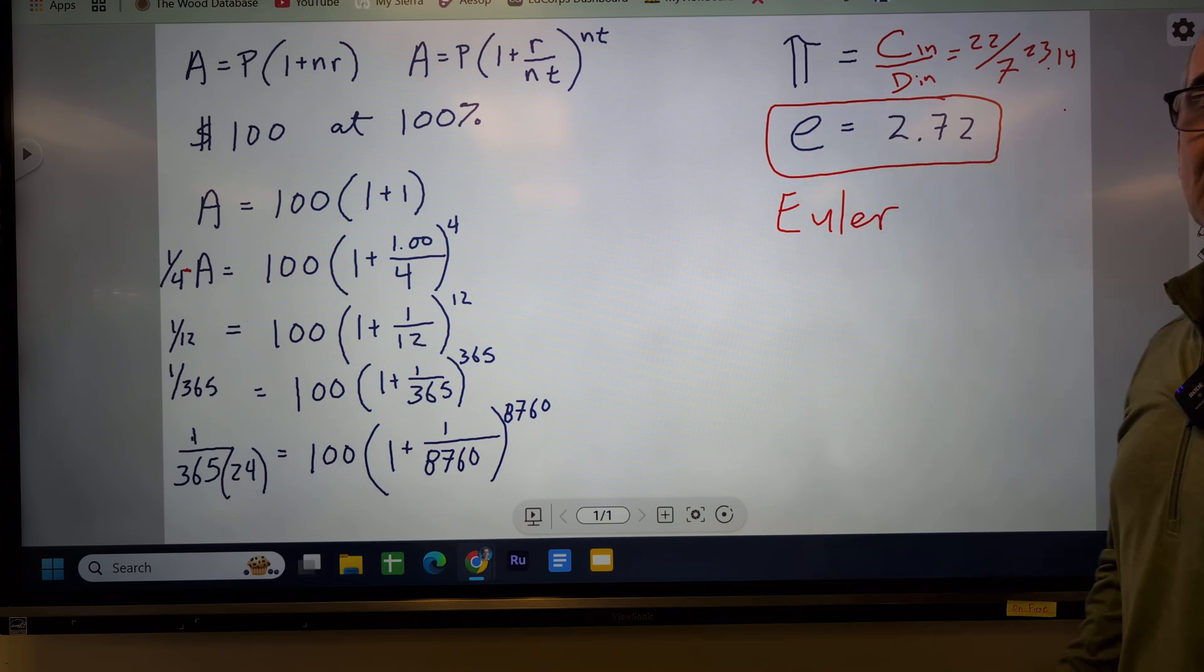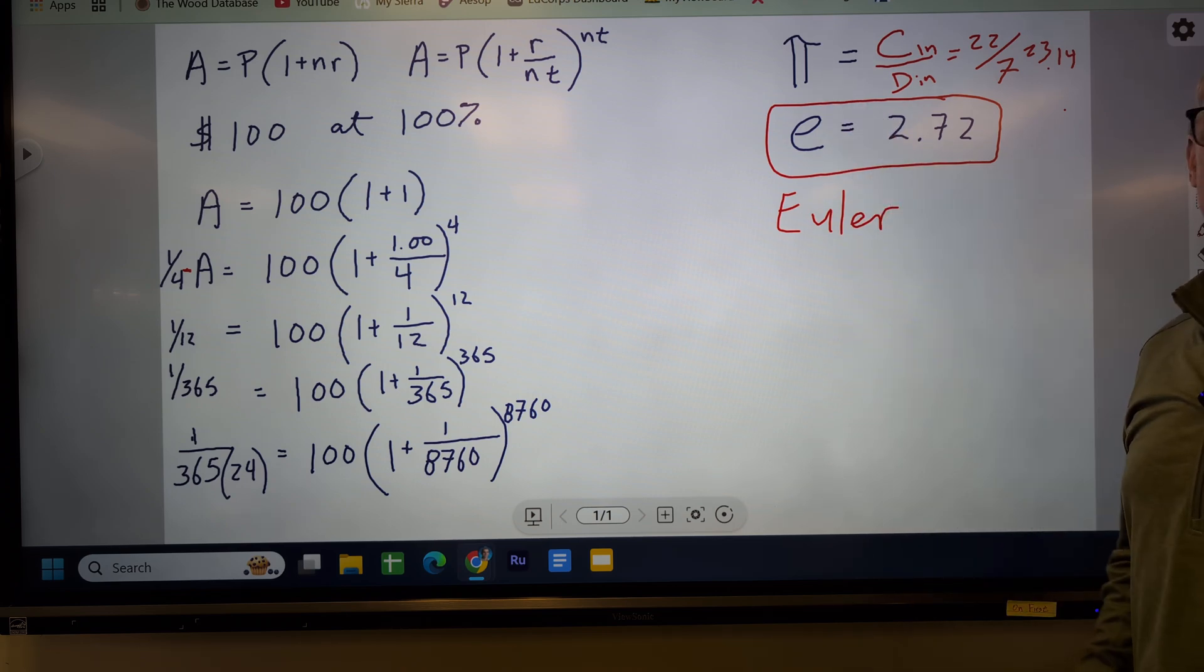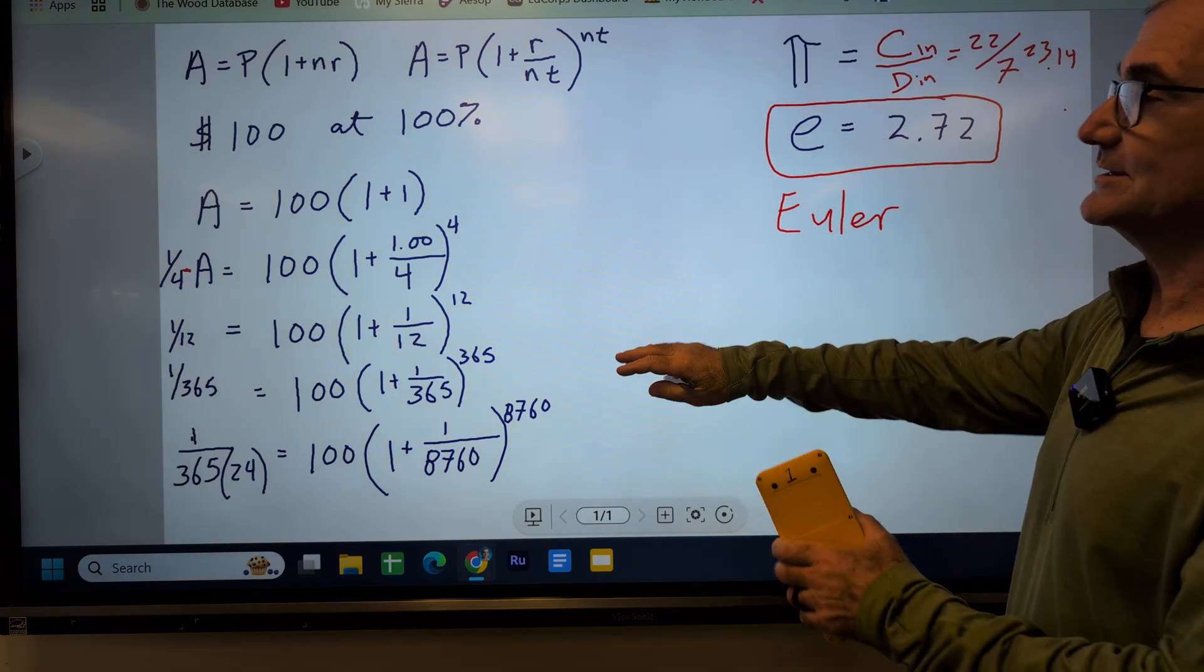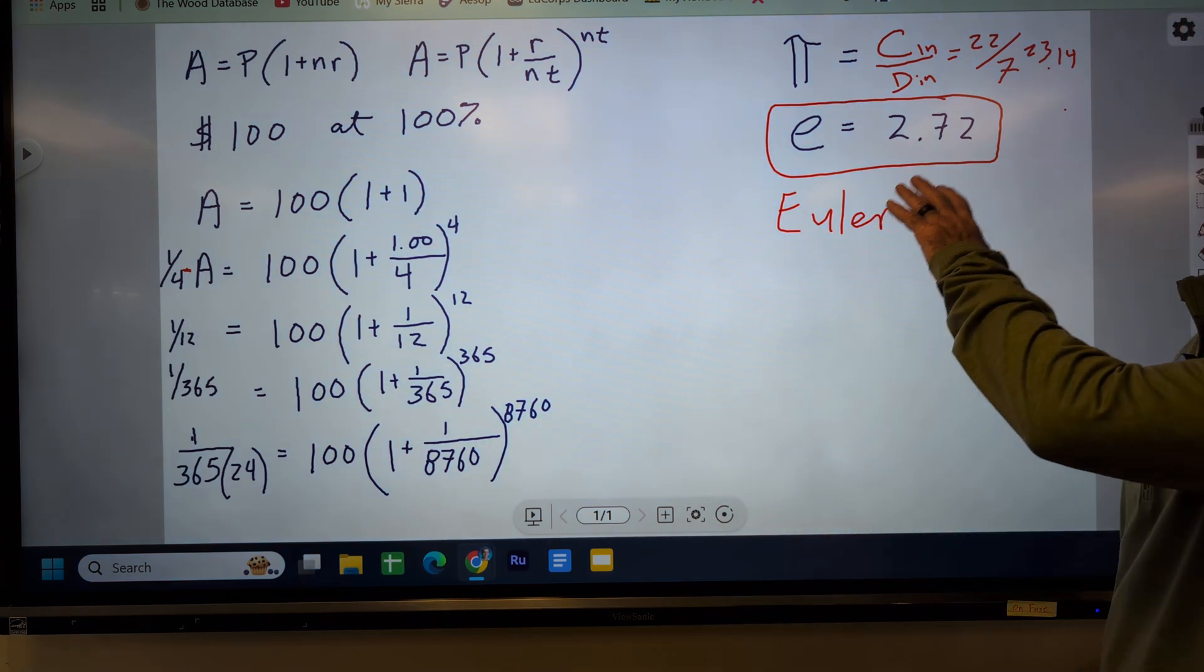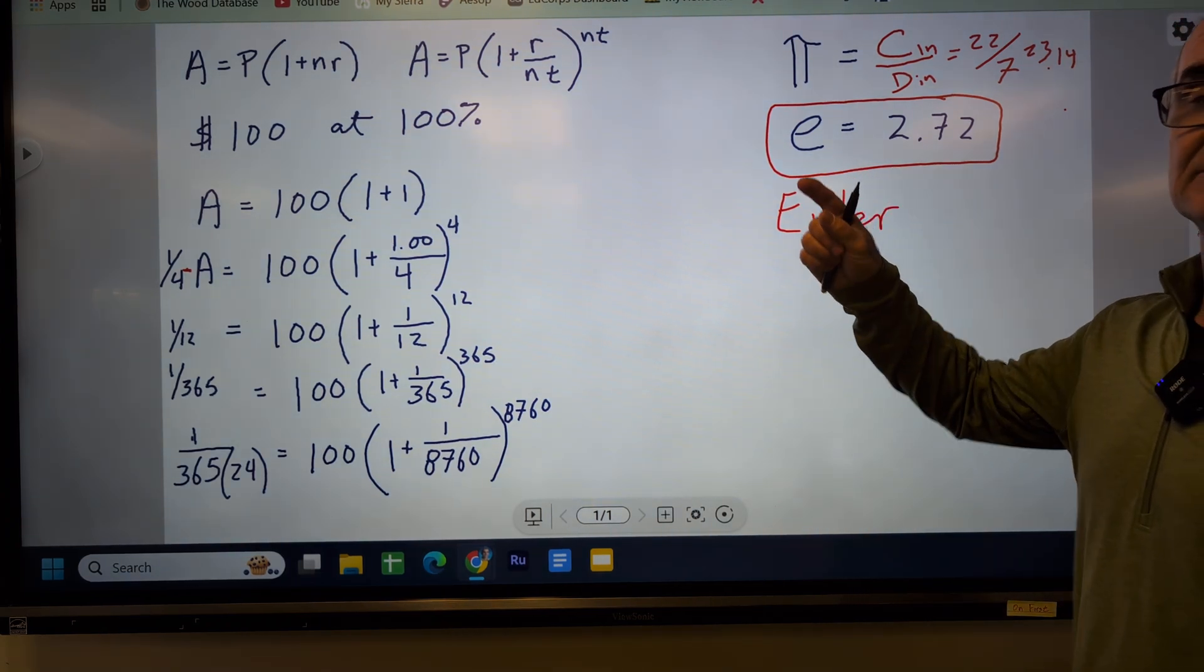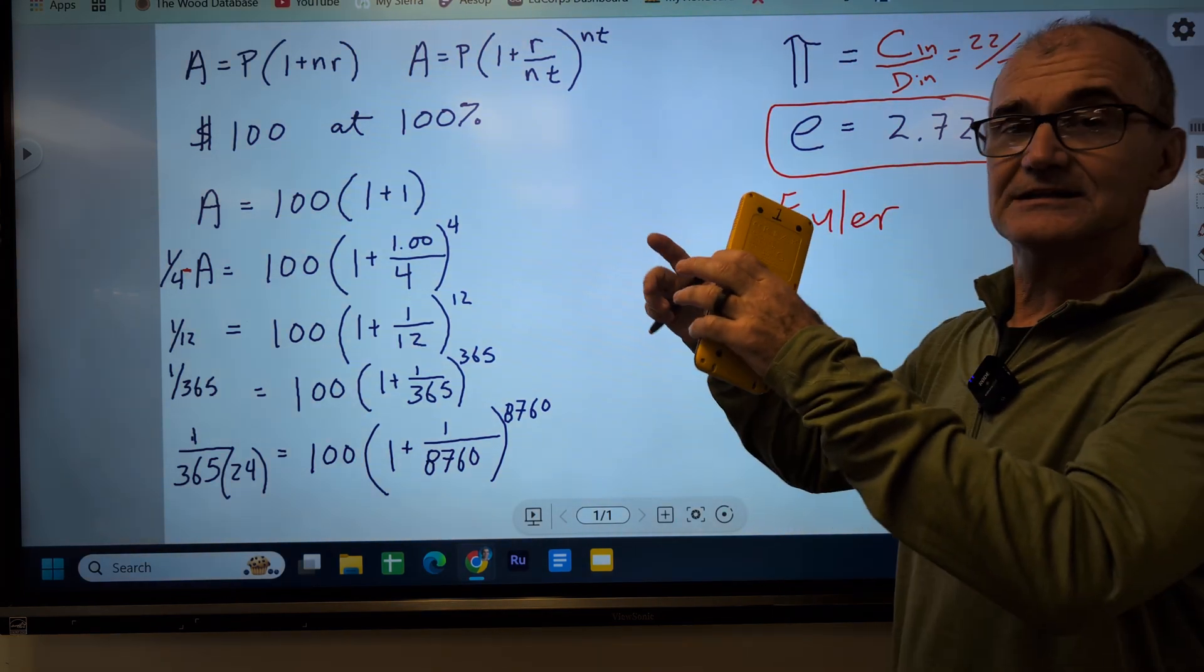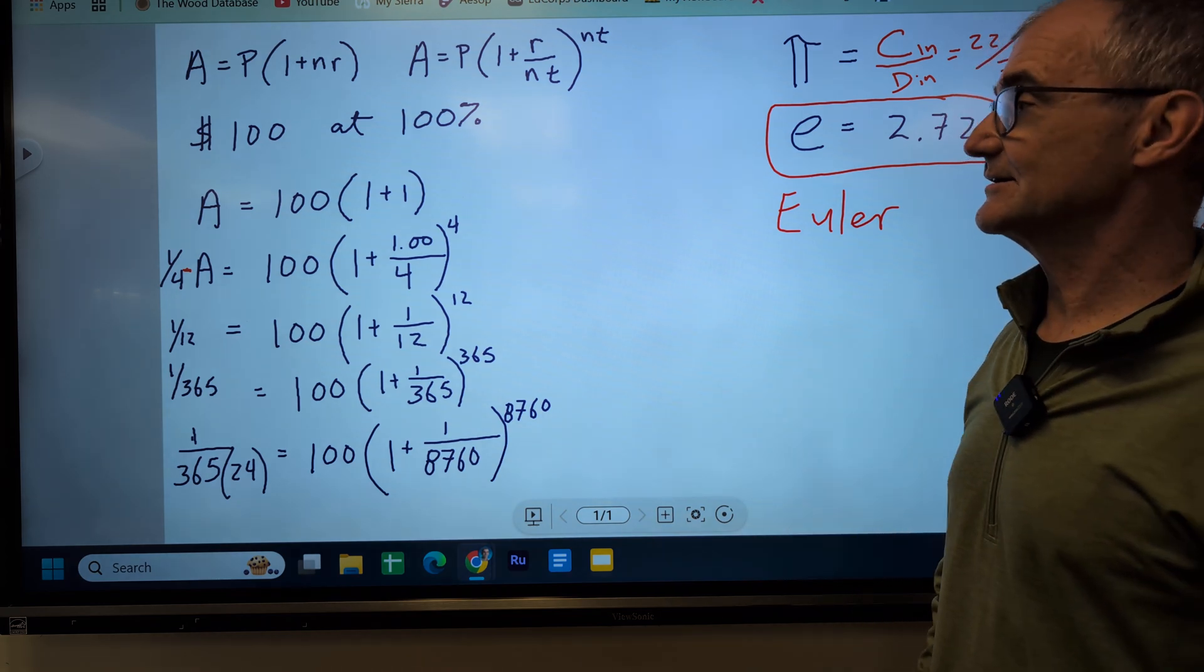e is approximately 2.72. It is an irrational number, the same as π, and this is a decimal approximation to it. Bernoulli came up with Euler's number through interest, and I'm going to run through that right now. And then Euler really found a lot of applications with Euler's number, natural growth, natural decay. One interesting thing about Euler's number is the derivative of Euler's number is equal to that number. It is the only thing that the derivative is equal to the function, so it has a lot of applications in calculus as well, and science and economics.